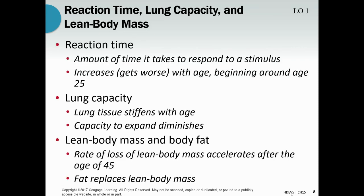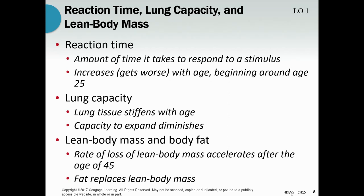Reaction time also goes down, and it actually starts going down almost immediately after you hit 25 years old. All throughout the semester I've been telling you your brain isn't really developed until around 25. It's mostly developed by your late teens and early 20s, but there's still some connections and myelin that aren't developed. Almost immediately after you hit 25 and your brain is, quote-unquote, developed, your reaction time starts to go down — it's one of the first things to start slowing down.